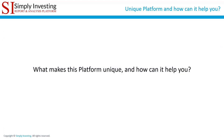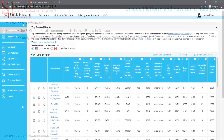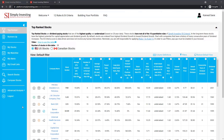What makes the Simply Investing platform so unique and how can it help you become a better investor? It is the only platform to apply the Simply Investing criteria to all common stocks in the US and in Canada. This platform immediately shows you the top rank stocks — these are stocks that achieve an SI criteria grade of 10 out of 10.